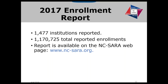Now we're getting to the enrollment data. Last year's report is available on the NCSERA website. There are two reports: the 2017 enrollment data report, and the 2017 IPEDS and SARA data comparison report. Both are available under the Documents section, then Development Documents, then 2017. Last year we had a total of 1,477 institutions that reported. We were very pleased with the increase in institutions reporting, and institutions are becoming more aware of this requirement and comfortable with the reporting process.